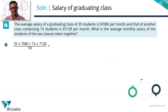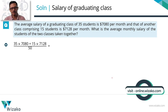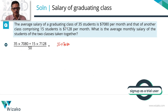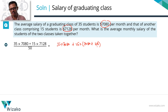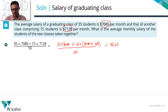Let's try a different approach. For 35 × 7080, I'll leave it as is since 7080 is the smaller salary. For the second part, 15 × 7128, I'll write 7128 as 7080 plus 48 — where 7080 is the average salary of the first class, and plus 48 is the difference. Divided by 50 should give us the answer. Expanding the right-hand side gives us: 35 × 7080 plus 15 × 7080 plus 15 × 48.